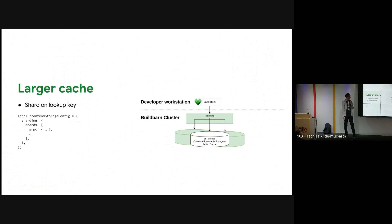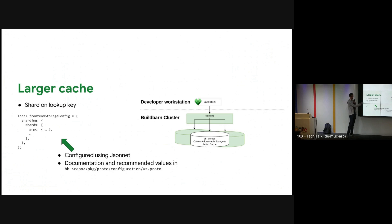We add a frontend to put certain blobs in different disk storages, based on the hash of the blob, so the frontend knows exactly which shard to go to. You can see here to the left that all the configuration is written in JSON.NET, and all the documentation about these configurations is stored in the proto files in the repositories. There are also default values — these are important to read, because zero is not a good value to use, which happens if you don't mention anything in your configuration.